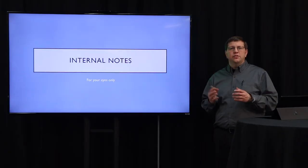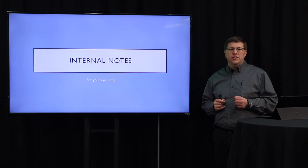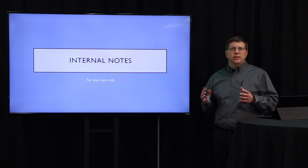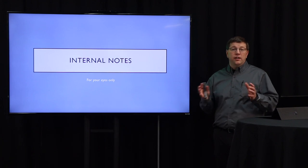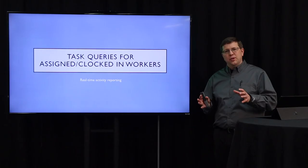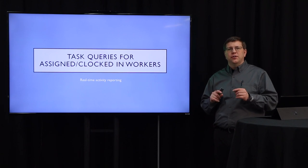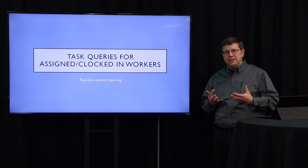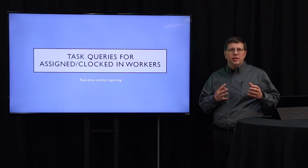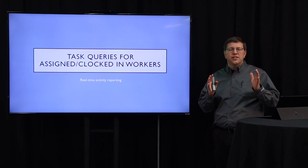A couple of quick features in EBMS 8.4: Internal notes are available on sales orders, manufacturing batches, and tasks. This simple field stores internal notes that will not be printed on any invoices or other customer-facing documents. Also, tasks now store and record who is clocked into a task and a list of who's assigned, so you can build dashboards and lists in both EBMS and My Time that reflect the real-time status of a task.